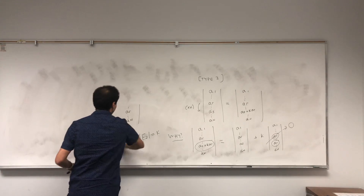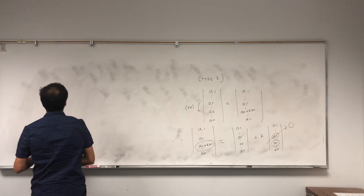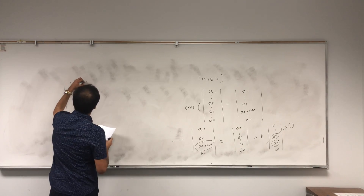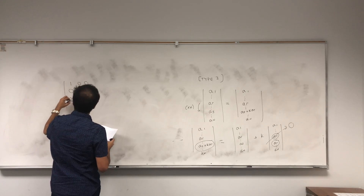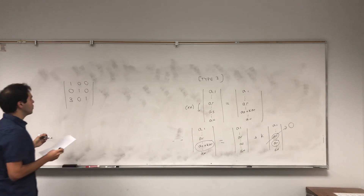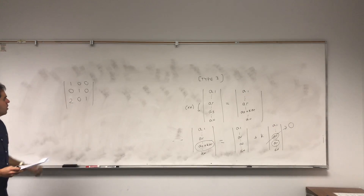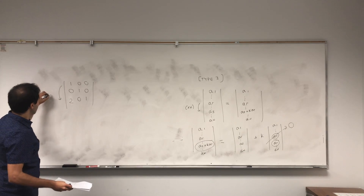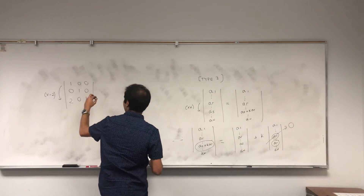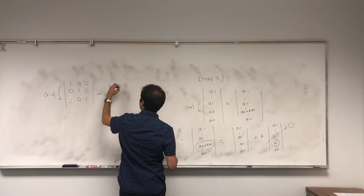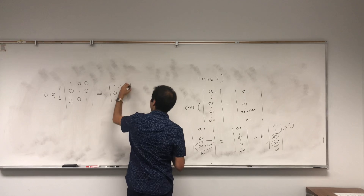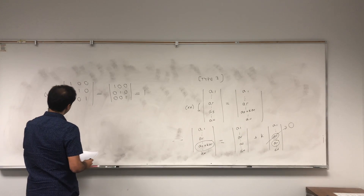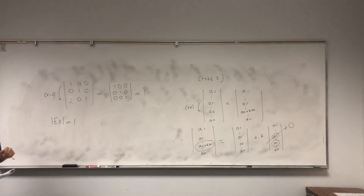Let me talk about the elementary matrix first. Suppose you have an elementary matrix of type 3 that adds two times the first row to the third row. Because row reduction of type 3 doesn't affect the determinant, you just add minus two times the first row back to the third row and get the identity matrix, which has determinant 1. In other words, an elementary matrix of type 3 has determinant 1.